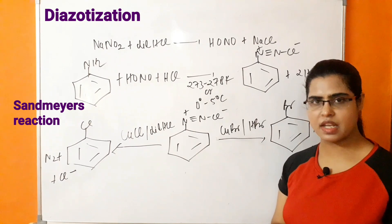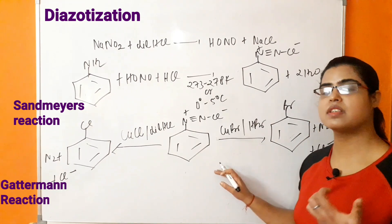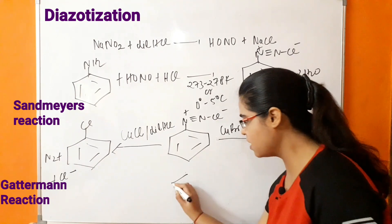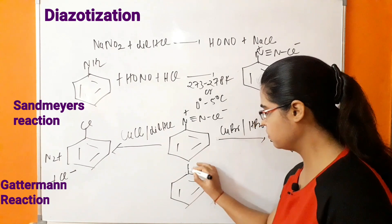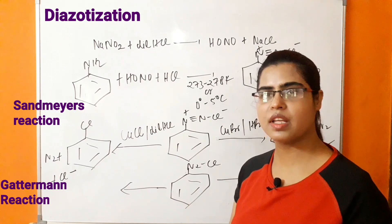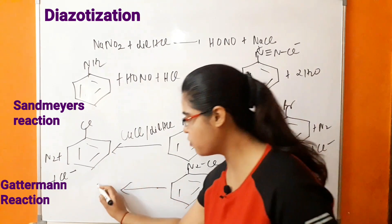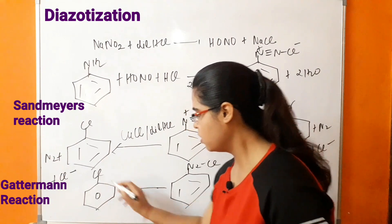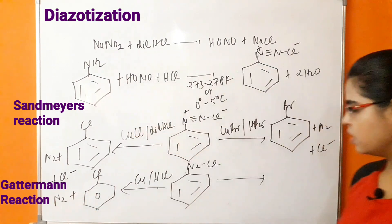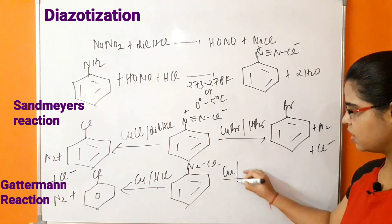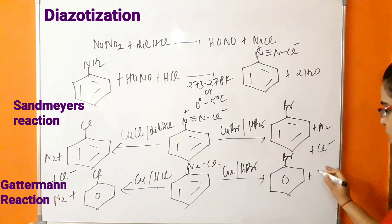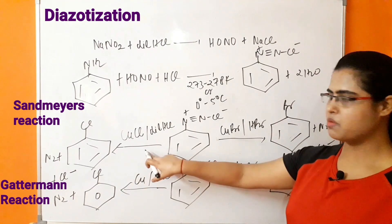Similarly, in the Gattermann reaction — another named reaction — the only difference from Sandmeyer's is that freshly prepared copper powder is used, dissolved in HCl or HBr. For the formation of chlorobenzene, copper powder is dissolved in HCl with removal of N2. Similarly, for bromobenzene, copper powder is used in the presence of HBr with removal of N2. This is the key difference between Sandmeyer's and Gattermann reactions.